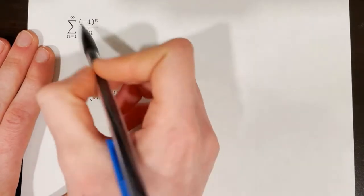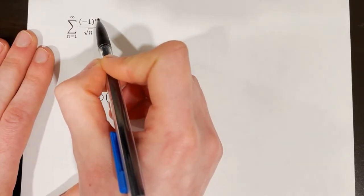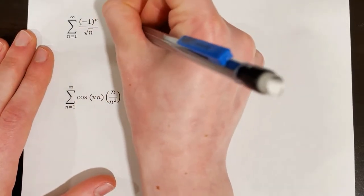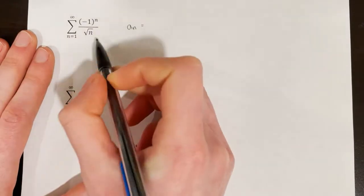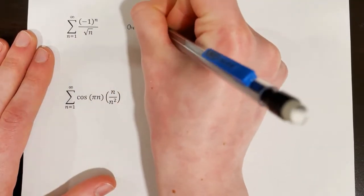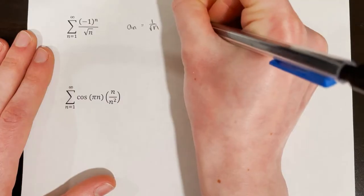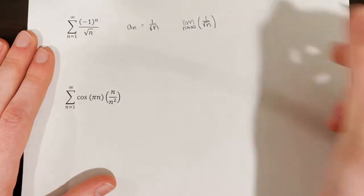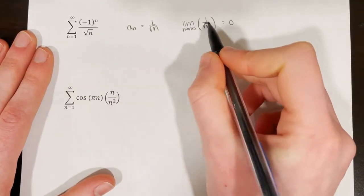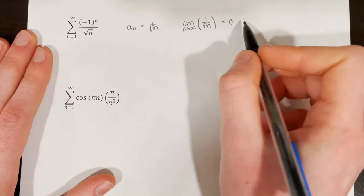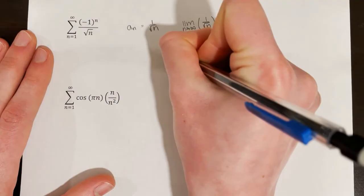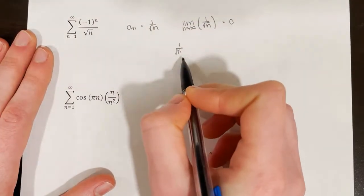Here's another example. The series has negative 1 to the power of n as the alternating factor, so a sub n equals 1 over the square root of n. First, the limit as n approaches infinity of 1 over rad n equals 0 — as we plug in larger numbers, 1 over a huge number approaches 0. Then we need to verify that 1 over rad n is decreasing.